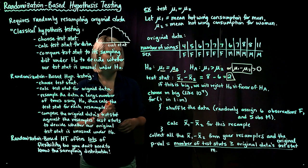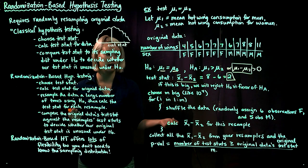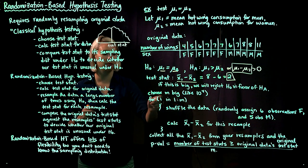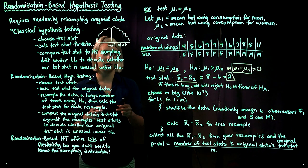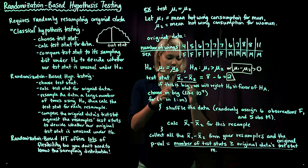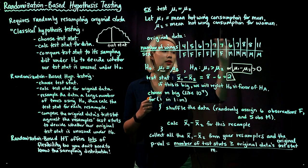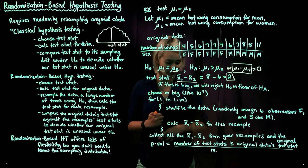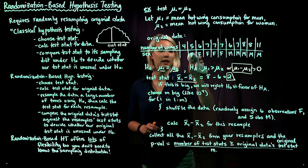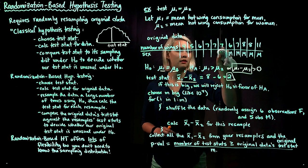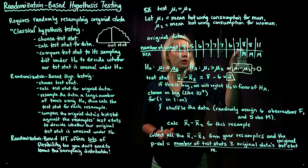We have our test statistic of 2, and now we need to resample the data a huge number of times to determine whether 2 is extreme under the null hypothesis. We choose a large Monte Carlo sample size — maybe m = 10⁴ or 10⁵ — and repeat the following step m times: we shuffle the data, randomly assigning observations to either male or female. In our original data set we have 6 women and 5 men, so we randomly choose 6 observations to be assigned to women and 5 to men. This erases the actual original assignment of men and women for one resample.